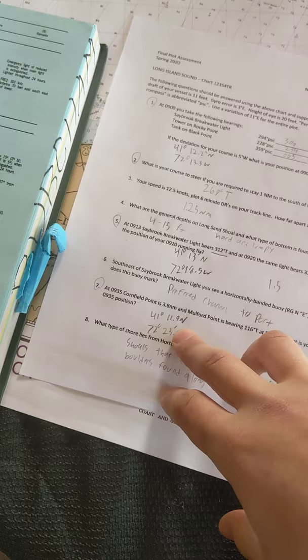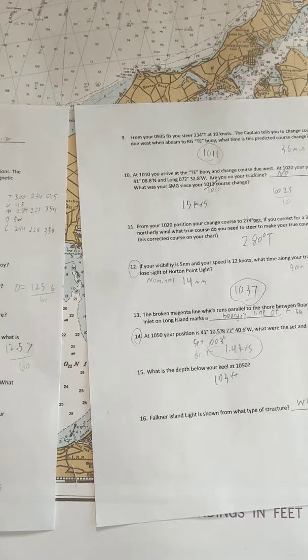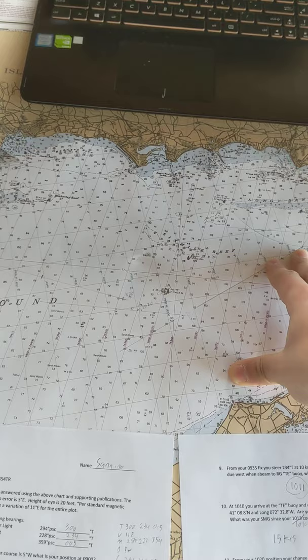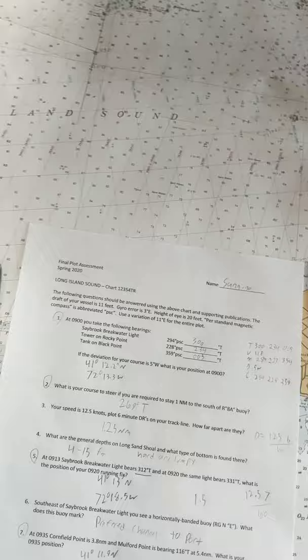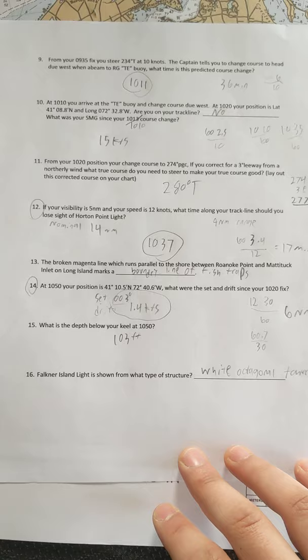For question number 7, I took the range of Cornfield Point to be 3.8 nautical miles and drew a range, and then a range of 5.4 nautical miles from Medford Point to that range, and found where they crossed. Taking the position from where it crossed to the Medford Point, I found that heading to be exactly 116 degrees true to make sure that is my exact position.